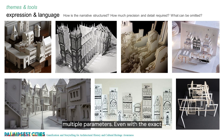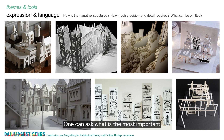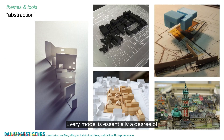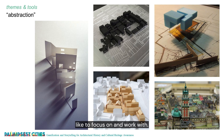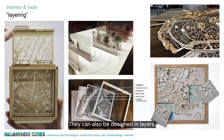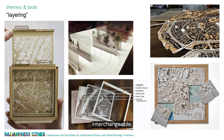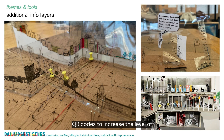The expression of a model depends on multiple parameters. Even with the exact same material, dramatically different sceneries and narratives can be built. One can ask: what is the most important element in this particular story of the model, and therefore, what can be eliminated or left out? Every model is essentially a degree of abstraction of a built or imagined reality. Abstraction refers to taking away some characteristics and reducing it to a set of essential ones that we would like to focus on and work with. Models can be designed in multiple ways to allow looking into them. They can also be designed in layers — these layers might be fixed or interchangeable. It's always possible to add additional layers of text, drawing, images or even QR codes to increase the level of information attached to them.